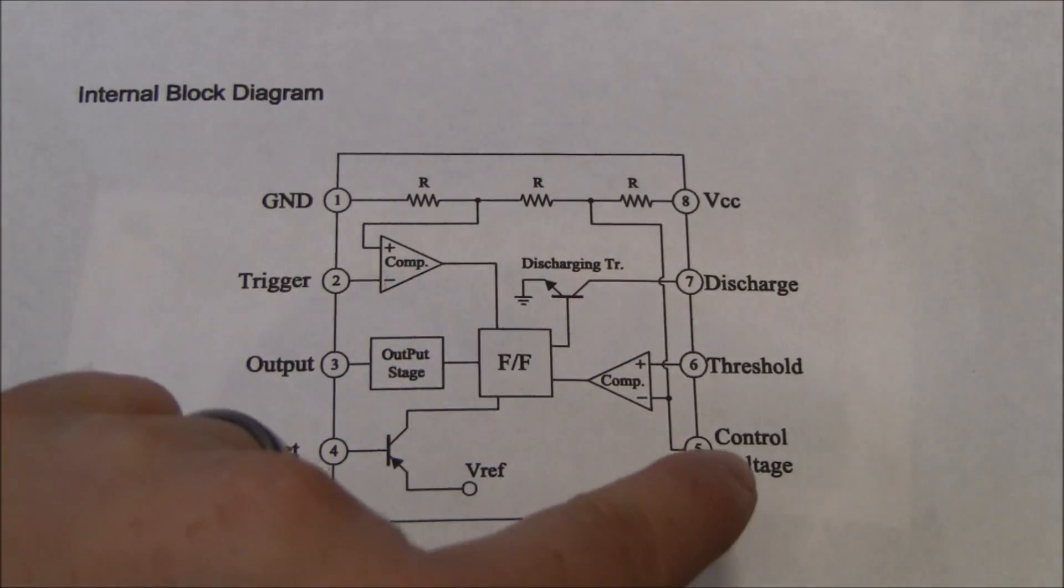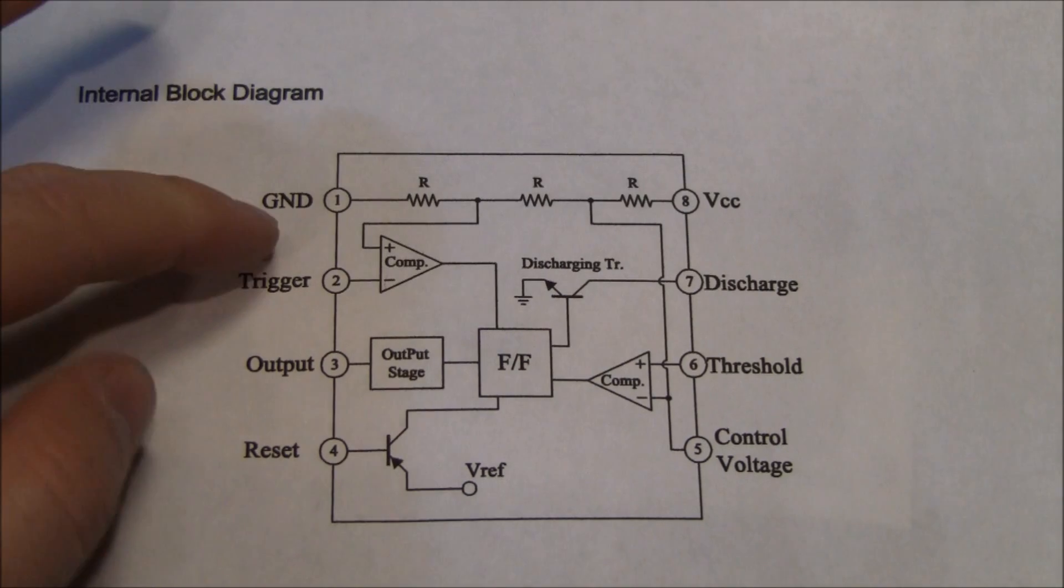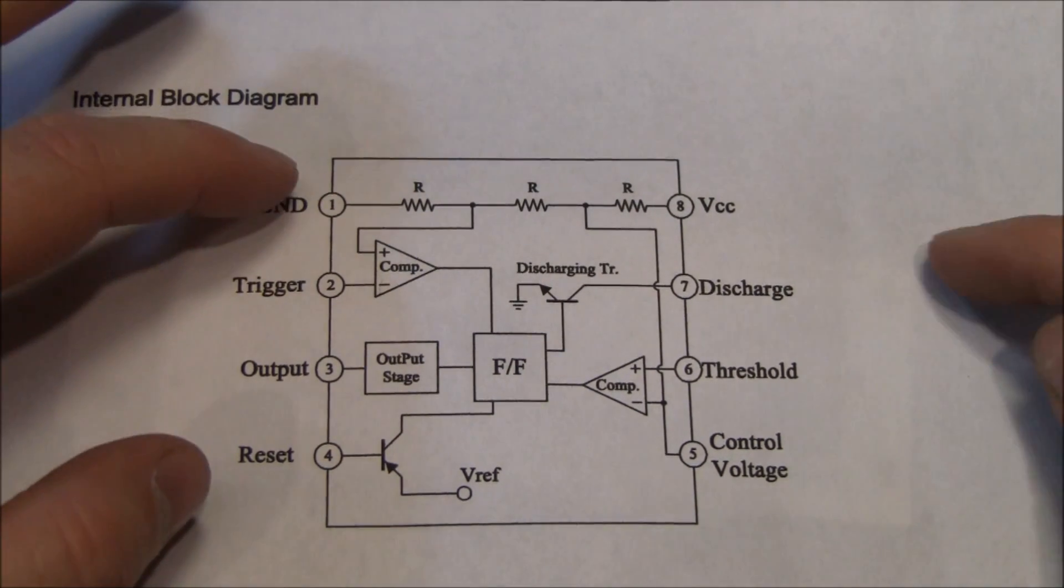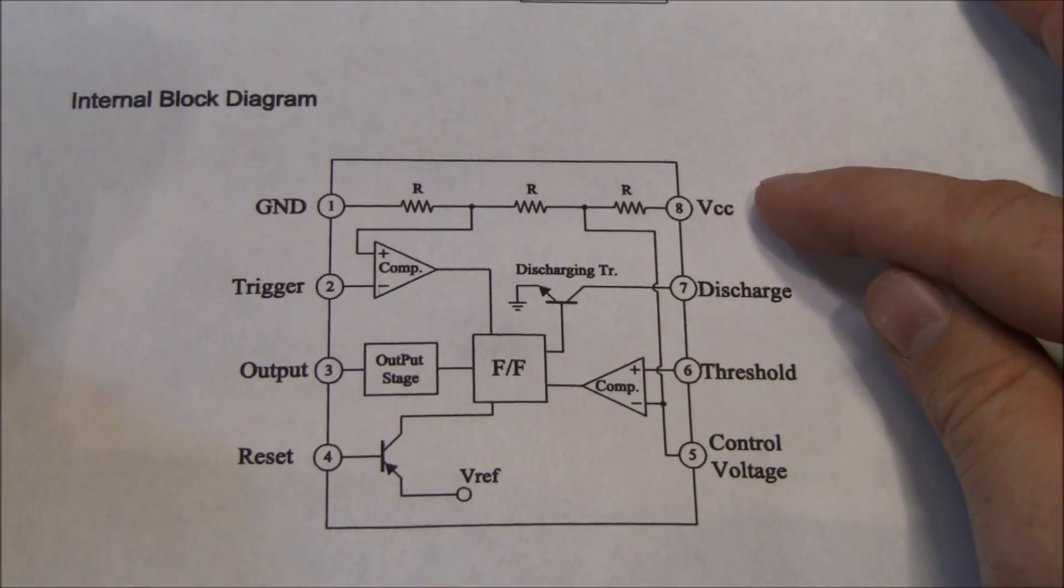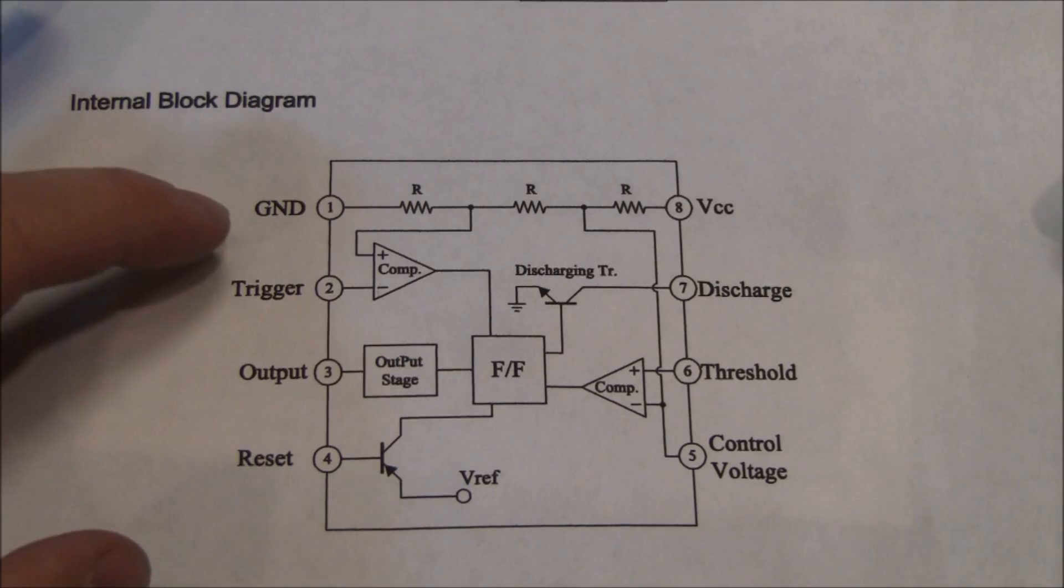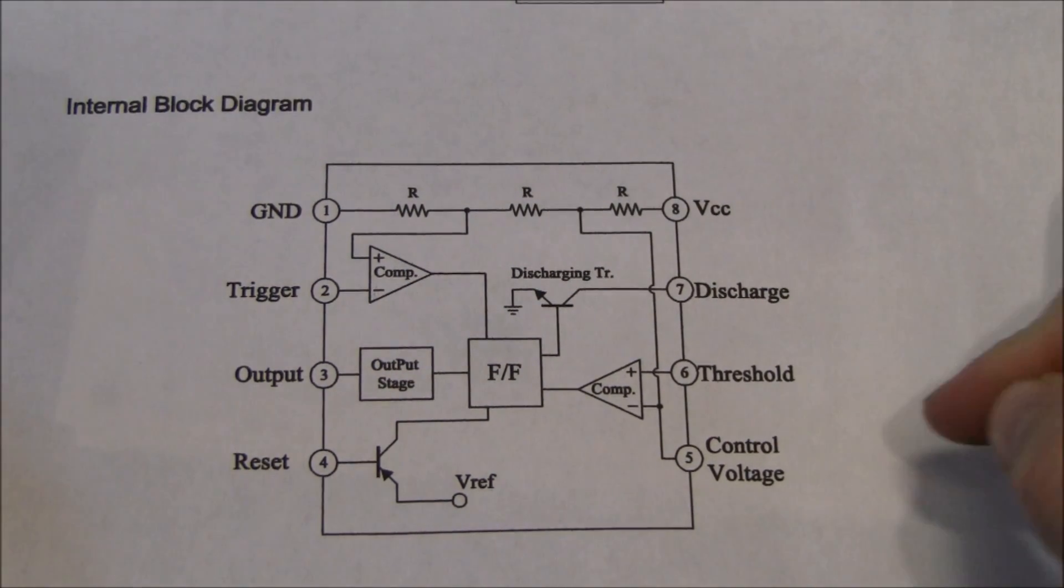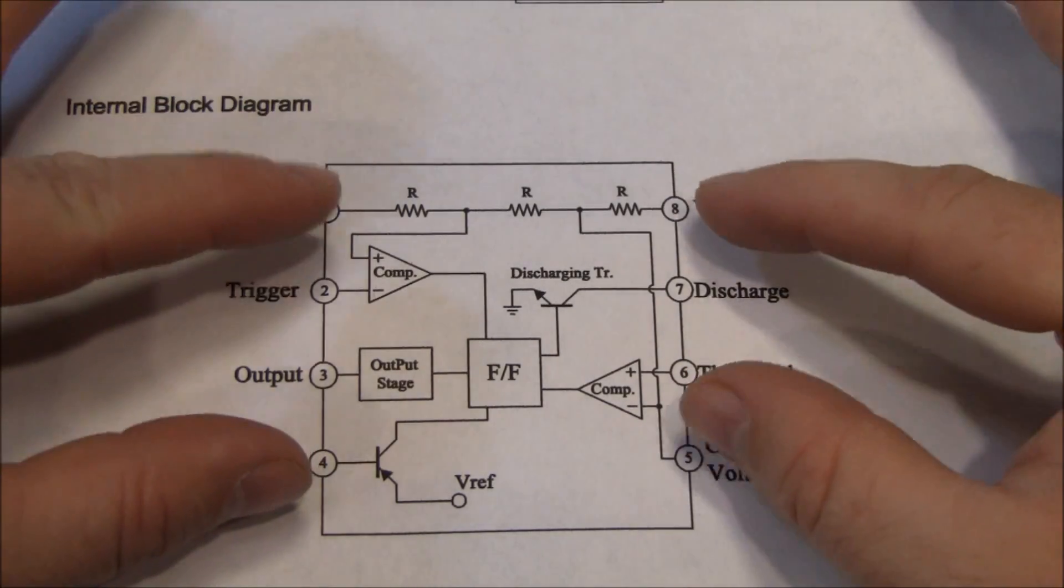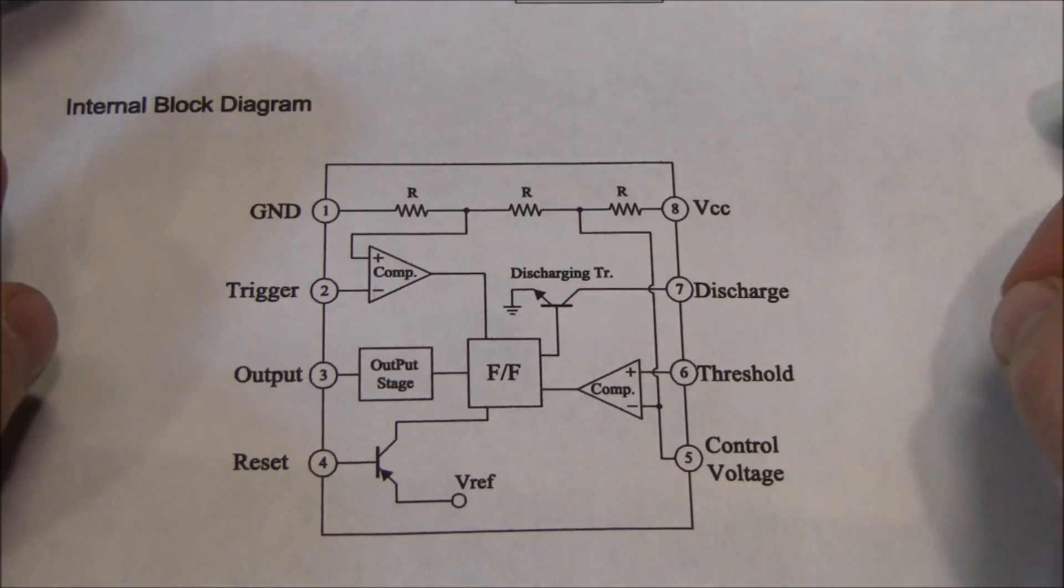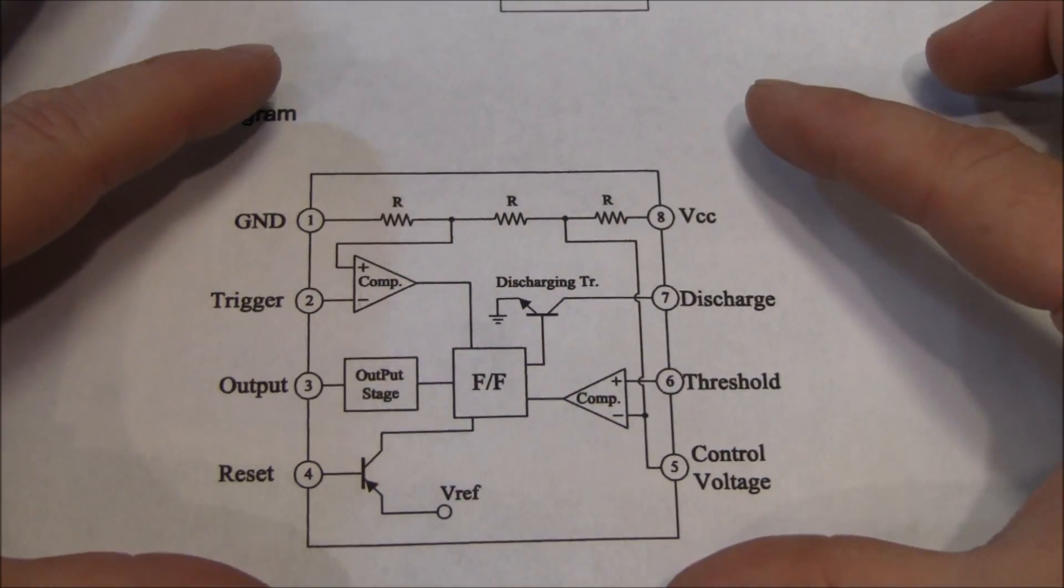Here are the eight pins on the 555 IC. Pin one is ground, pin eight is plus voltage. You can run these on 5 to 12 volts. Then you have trigger, output, reset, discharge threshold, and control voltage. You'll connect these pins to other electronics, resistors and capacitors, and get the circuit you want.